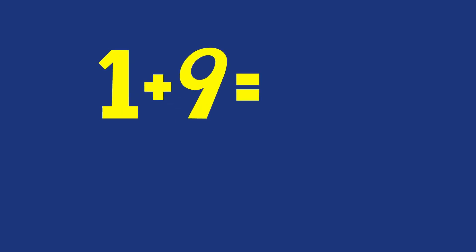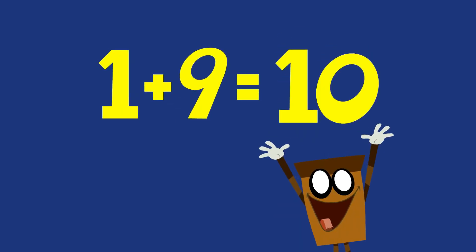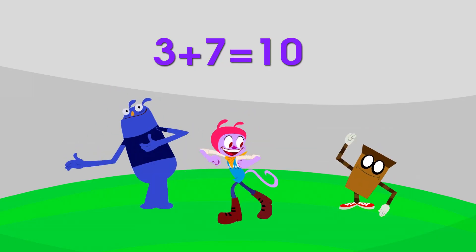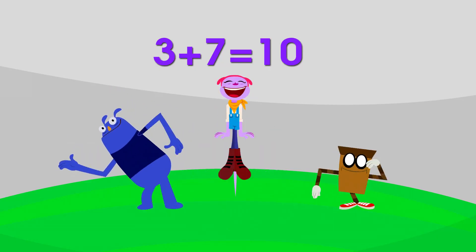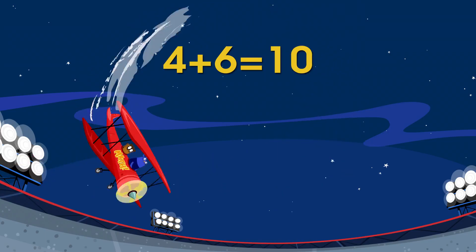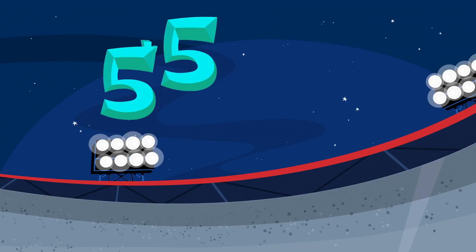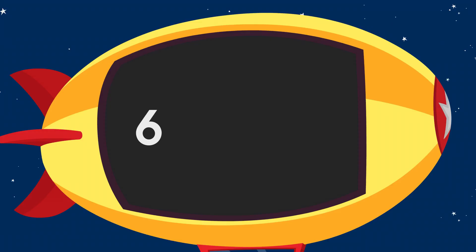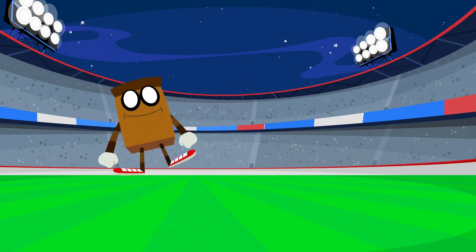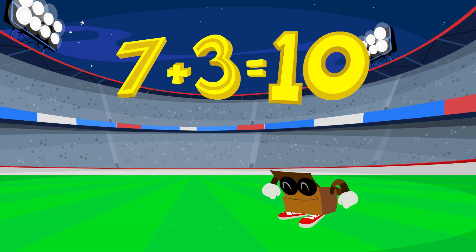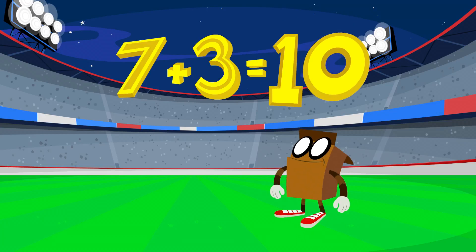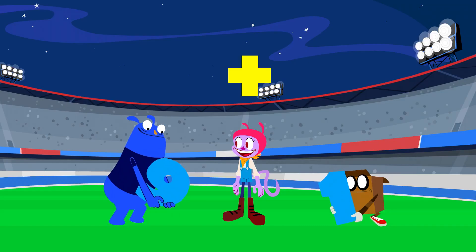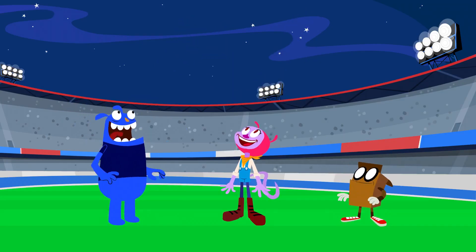One, nine, that means ten. Two, eight, that means ten. Three, that means ten. Four, six, that means ten. Five, five, that means ten. Six, four, that means ten. Seven, eight, that means ten. Two, that means ten. Nine, one, that means ten.